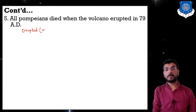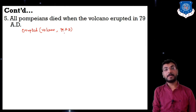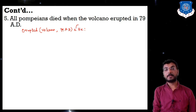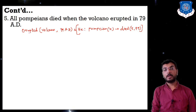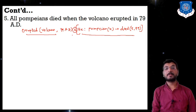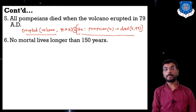Fifth: 'All Pompeians died when the volcano erupted in 79 AD.' First we represent volcano erupted in 79 AD, and then all Pompeians died. So: for all x, if pompeian(x) then x died in 79 AD. This is expressed in conjunction — the AND sign — because the volcano erupting triggered that activity.